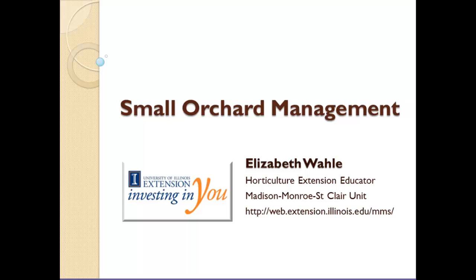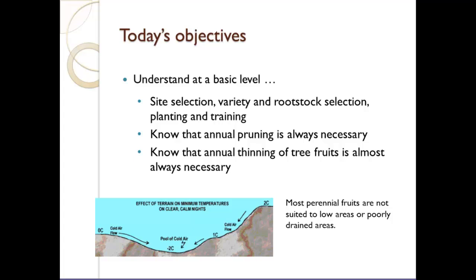Today we're going to do the second part of the small orchard sessions. Last week covered insect control in small orchards, and today I'm going to talk about the actual horticultural aspects, alluding to some pest management, but really focusing on horticultural management of orchards. My main objectives are site selection characteristics, variety information, rootstock selection for apples, planting and training, annual pruning, and apple thinning both chemically and manually.